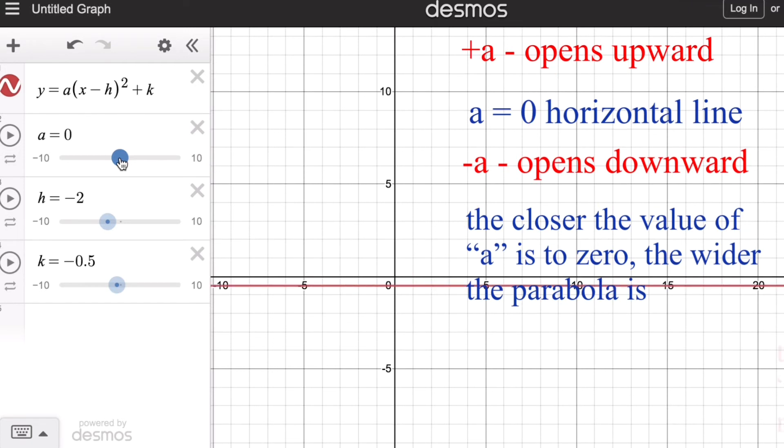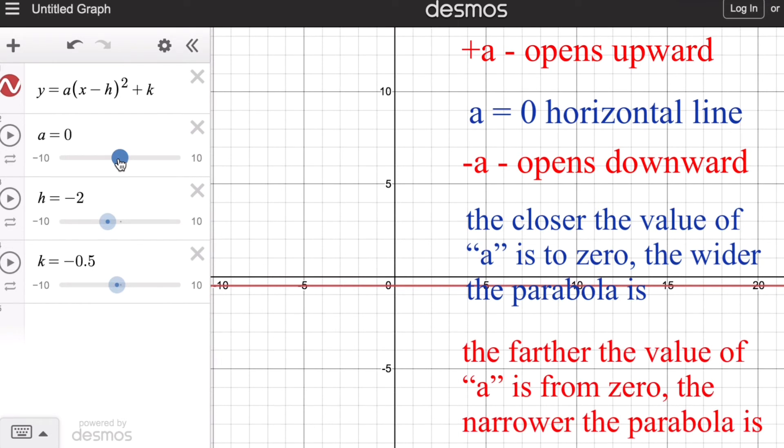On the contrary, the farther the value of a is from zero, the narrower the graph becomes. And that is true on the other side as well. The farther the value of a is from zero, the narrower the parabola becomes.